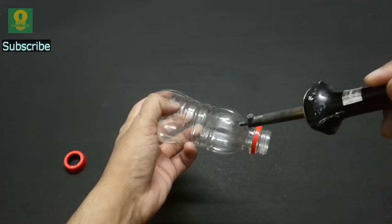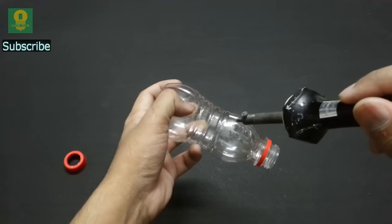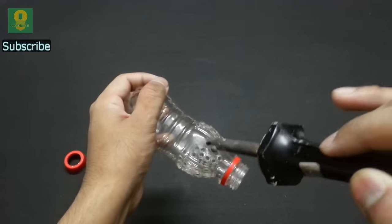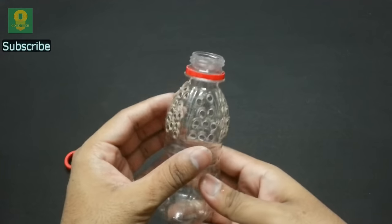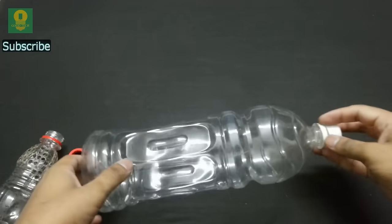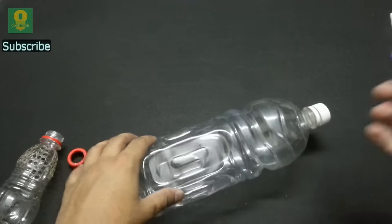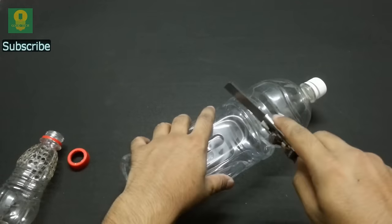Now, make a few holes in the neck of the bottle, take a large plastic bottle. Using a knife, cut the bottle into two pieces from the neck.